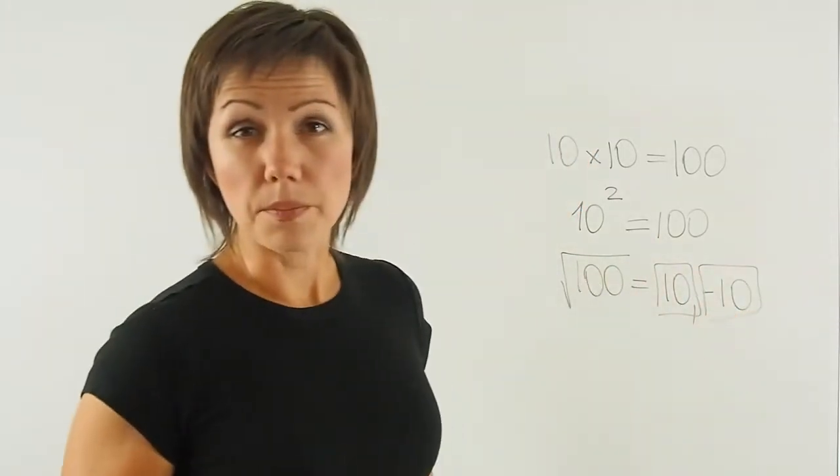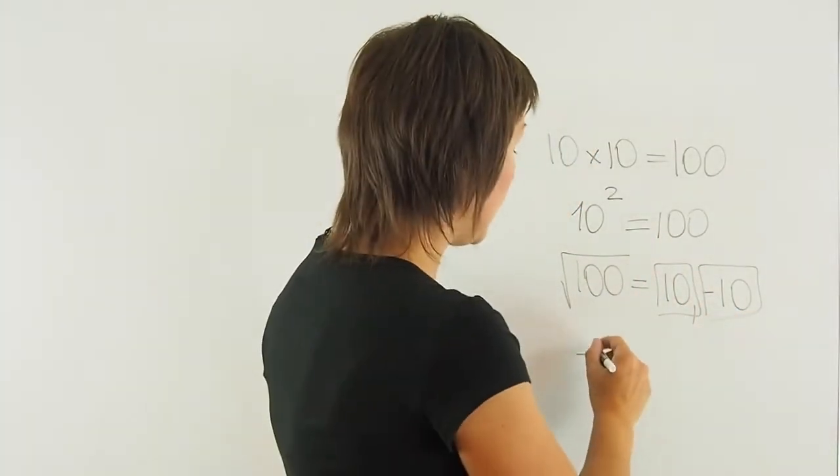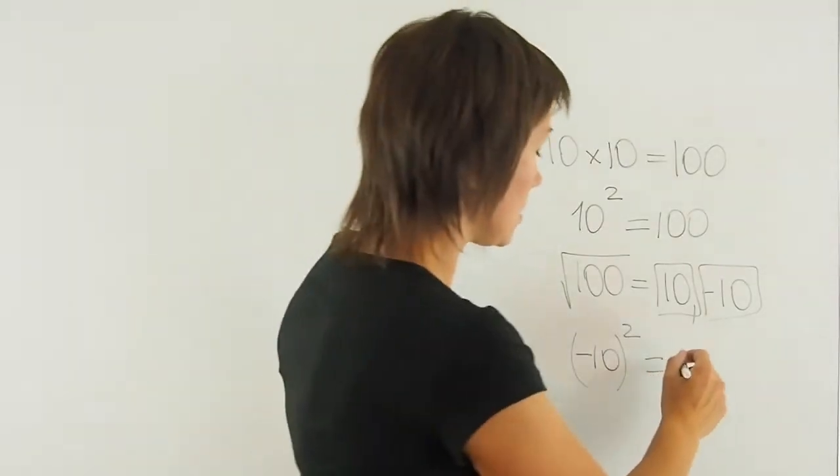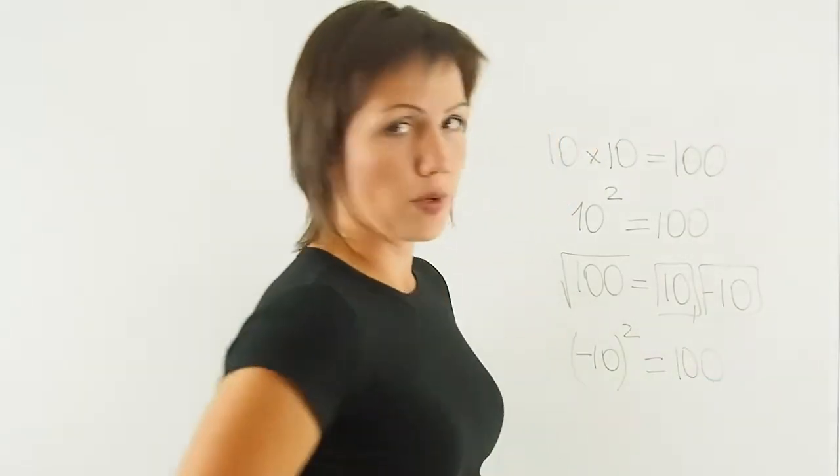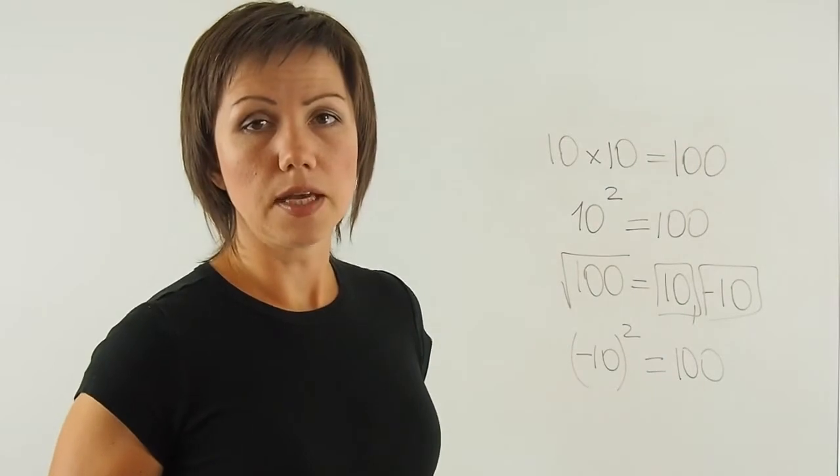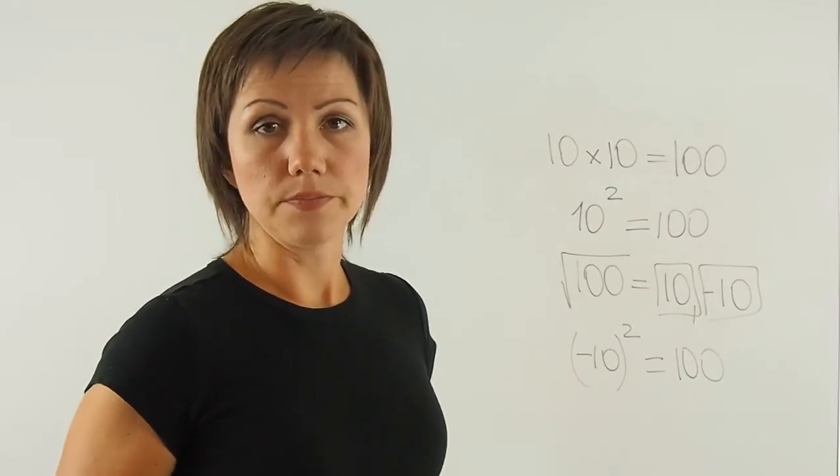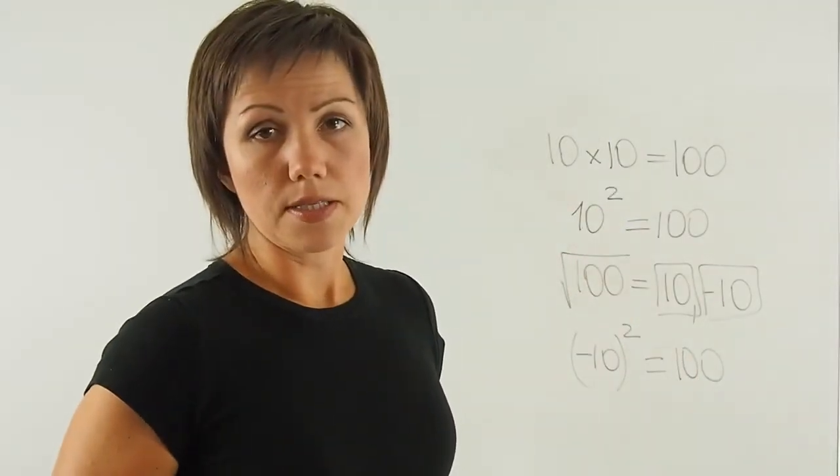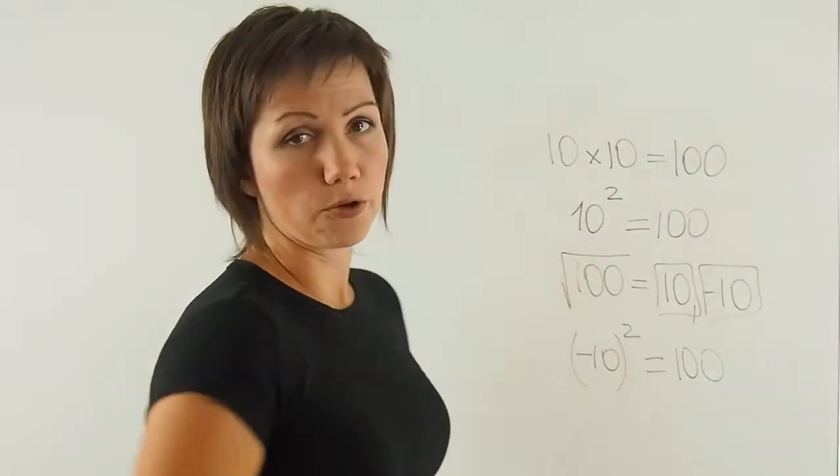How come? Negative 10 squared will give me positive 100, since when I multiply two negatives by each other, negative 10 times negative 10, it's 100. And the same thing happens with positive 10. When multiplied by itself, it's also 100.